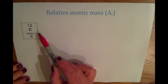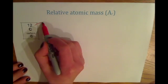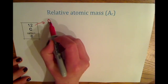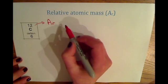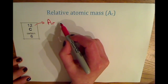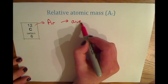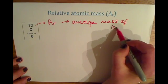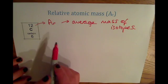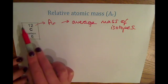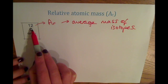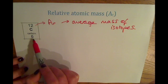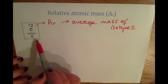This top number on the periodic table stands for relative atomic mass, abbreviated to Ar. For higher tier, you need a secure understanding that this is an average mass of the isotopes. On your periodic table these are mostly rounded, so you won't see the decimal place reminding you it's an average — but different isotopes like carbon-14 do exist and are taken into account when calculating the relative atomic mass.